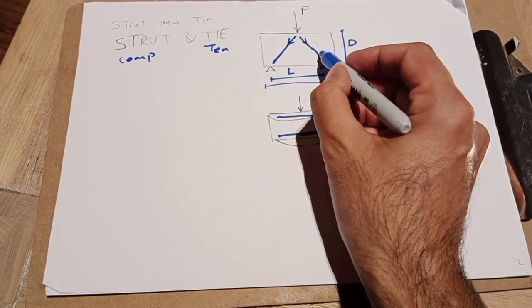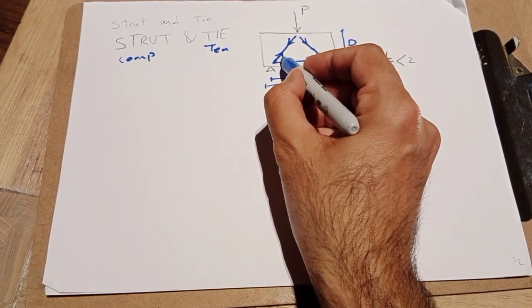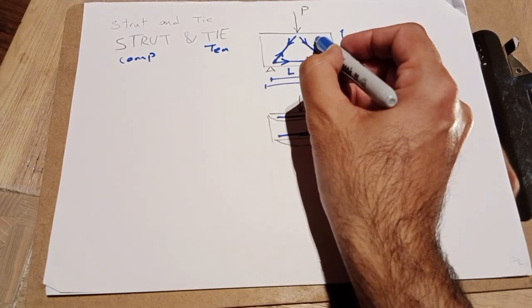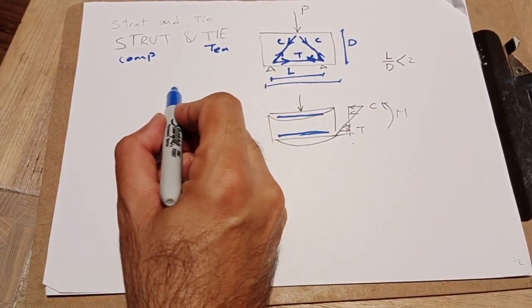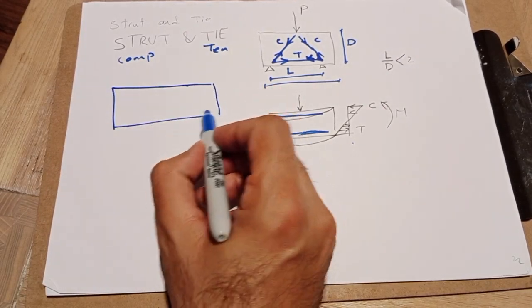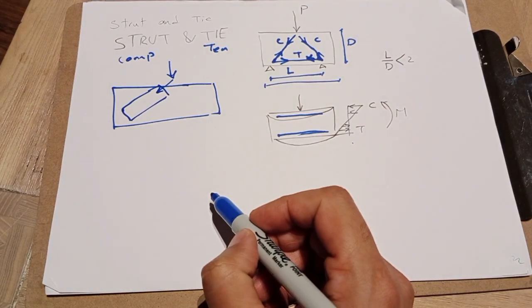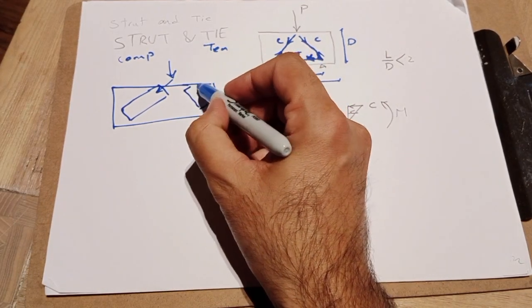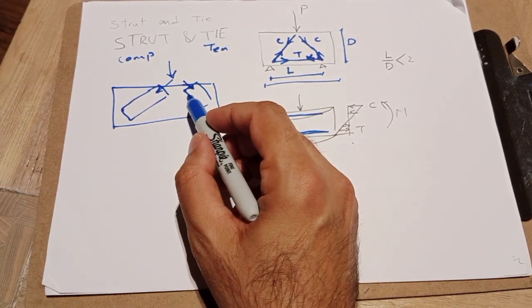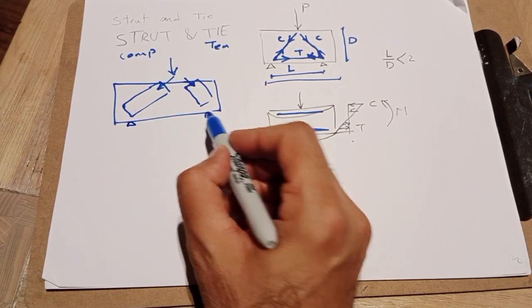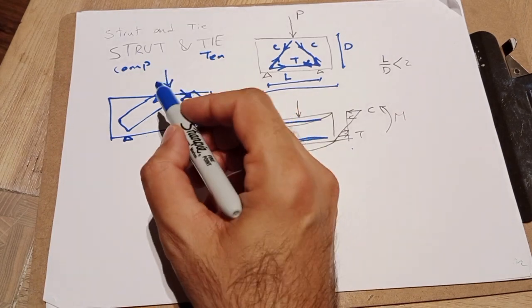The compression here causes tension, so certain areas will be in compression and others in tension. The concrete part handles compression on both sides. In general, concrete is very strong in compression, but depending on the angle defined by the support points, the strength of the concrete, and the applied load, sometimes we need extra reinforcement to take that compression.